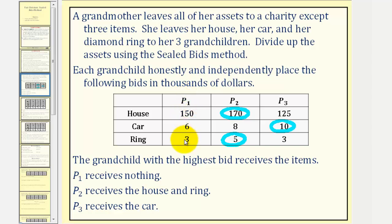So player one receives nothing. Player two receives the house and the ring, and player three receives the car.